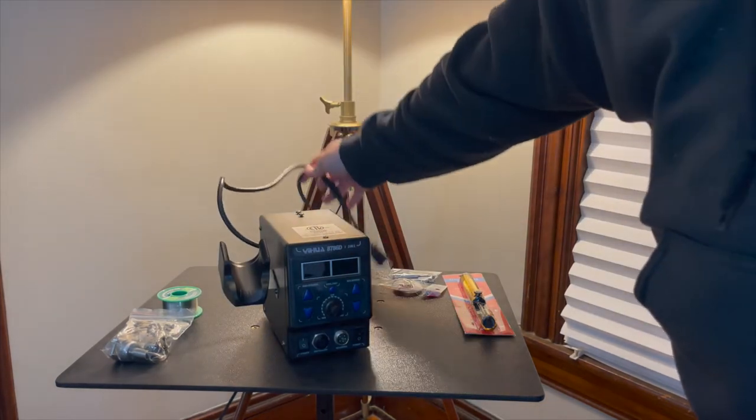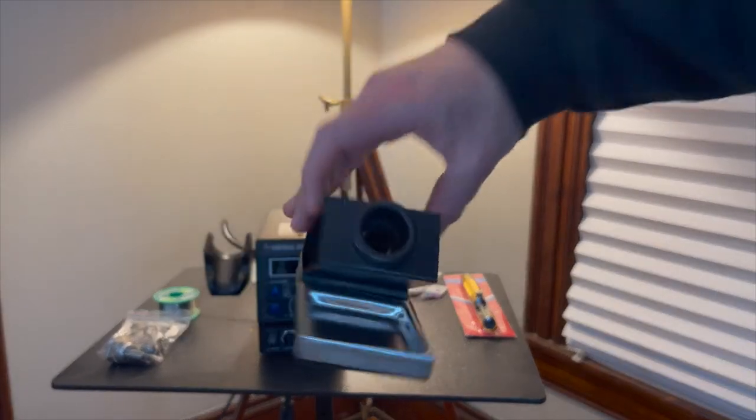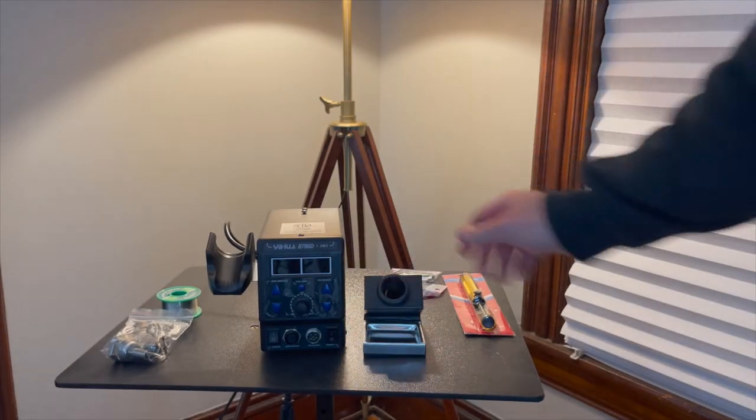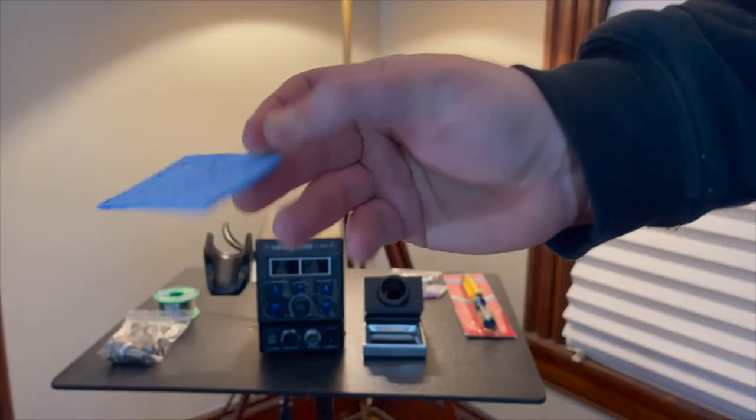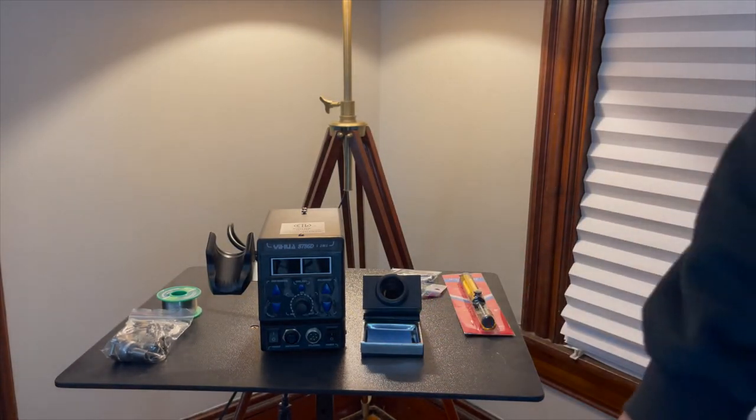Let's get into the main stuff here. The rework station itself. This is where you put the hot air. It comes with a stand for the soldering iron. It's a little sponge. So you put water in that and then you can wipe off the soldering iron.